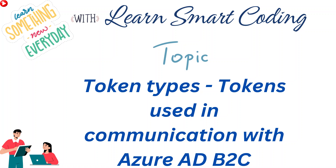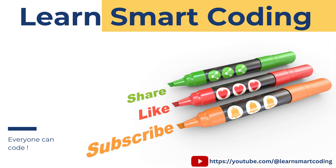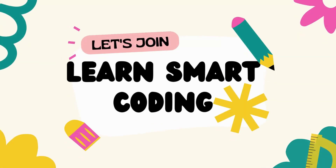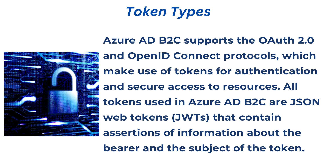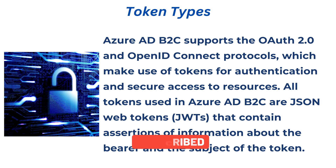Welcome back. In this video I'm going to explain the token types used in Azure AD B2C and how they communicate with Azure AD B2C. Azure AD B2C supports the OAuth 2.0 and OpenID Connect protocols, which we saw in previous videos. These protocols make use of tokens for authentication and secure access to resources. All tokens used in Azure AD B2C are JSON Web Tokens, also called JWTs, which contain assertions of information about the bearer — the subject of the token.